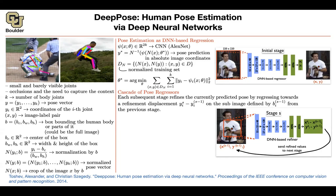A question from the chat: do the pose vectors have actual meaning, like 'jump'? No — for this task, all we care about are the locations of the joints. Once you know them, you can draw the limbs between them. This is no longer classification; you are localizing the joints.